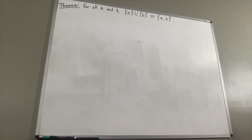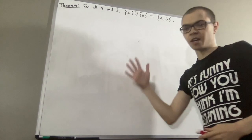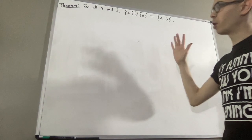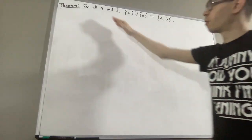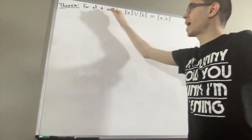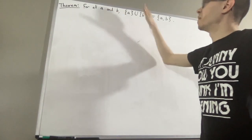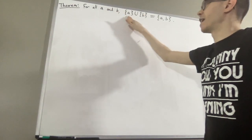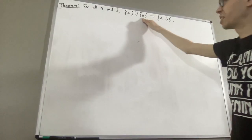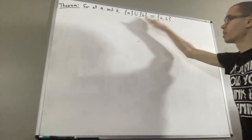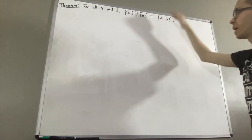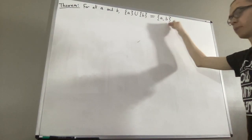Hello! In this video, we are going to prove the following theorem: for all A and B, the union of the singleton set of A and the singleton set of B is equal to the pairset of A and B.